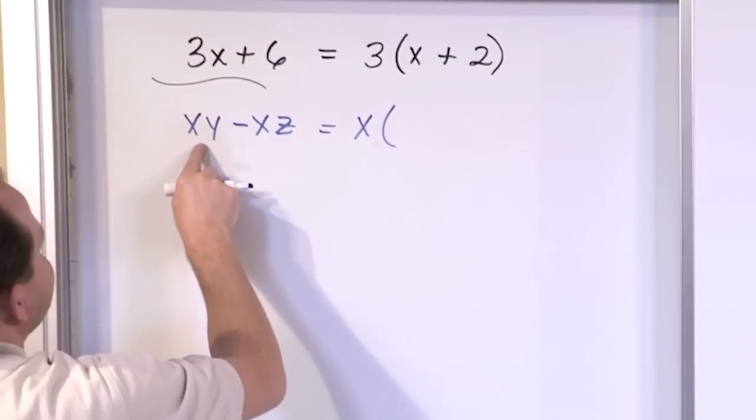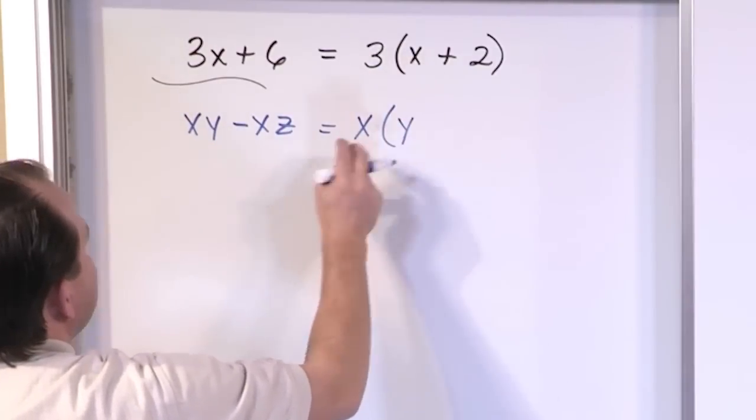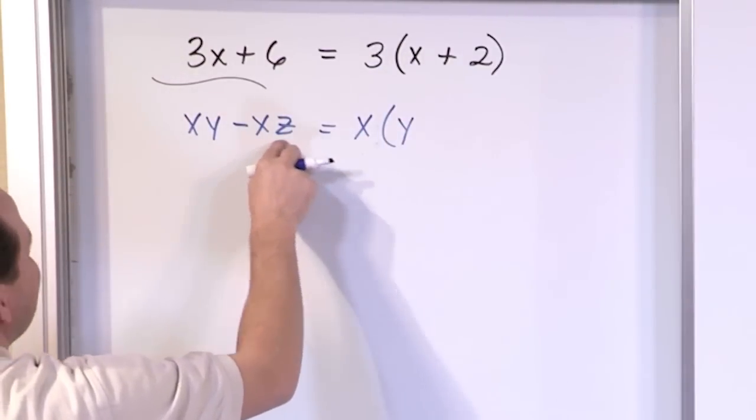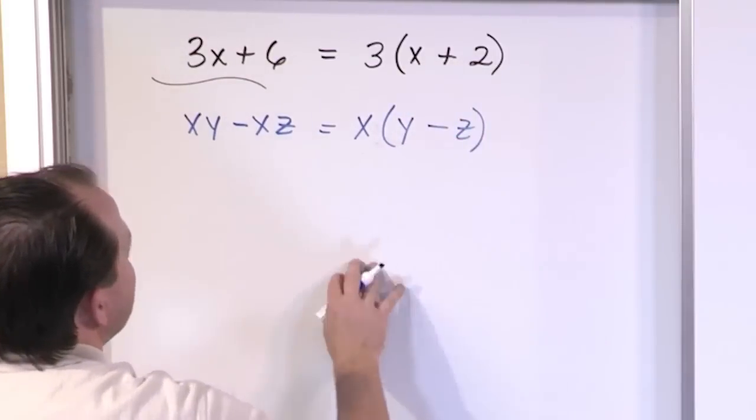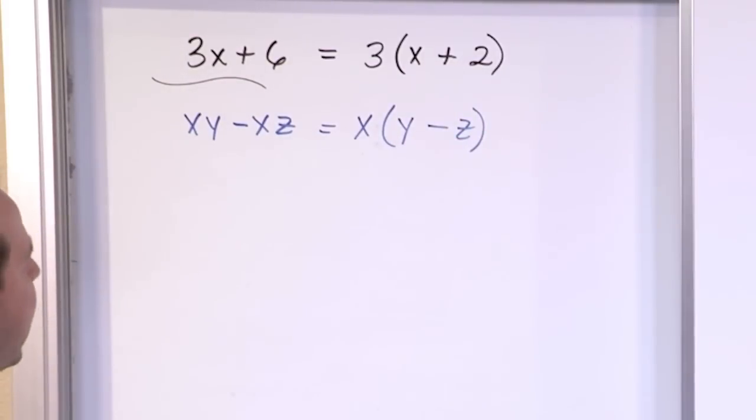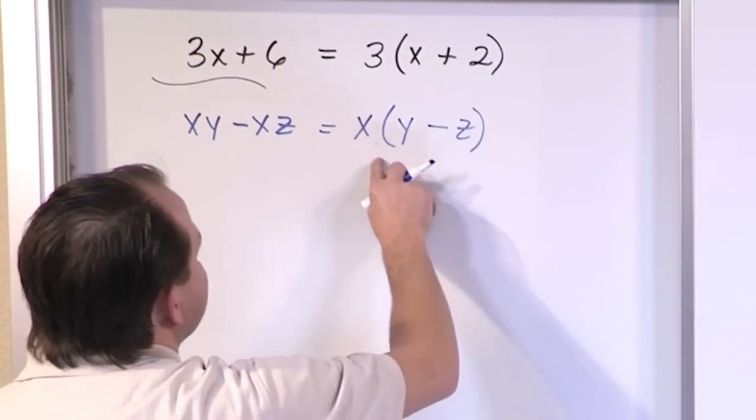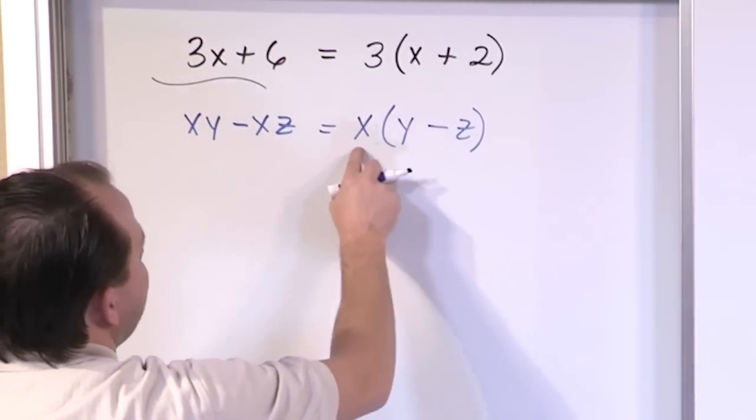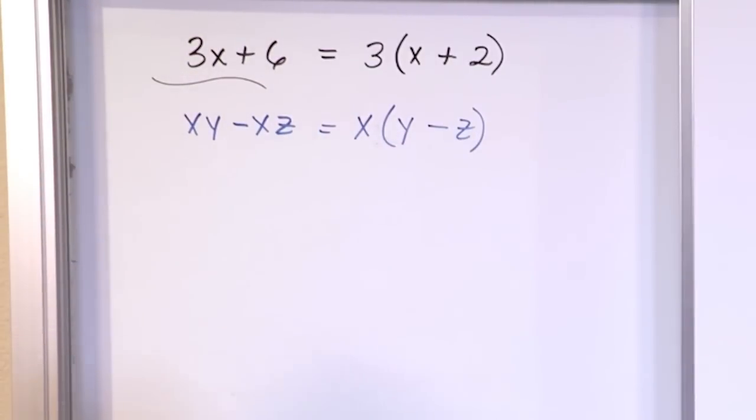Whatever I write in here has to make sense so that after I do the distribution, it equals this. So once I pull it out of the first guy, the only thing left over is y, and once I pull it out of the second guy, the only thing left over is negative z. So this is my factorization, and if you want to check it, you just distribute this. x times y minus x times z, and that's exactly what we started with.